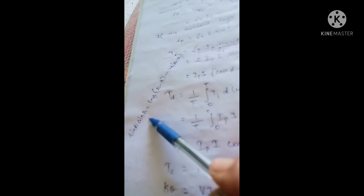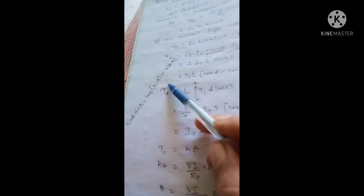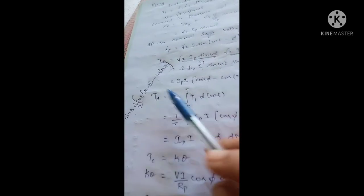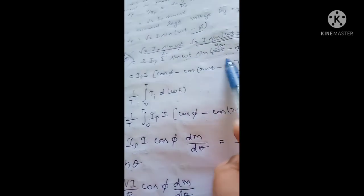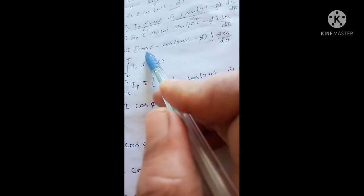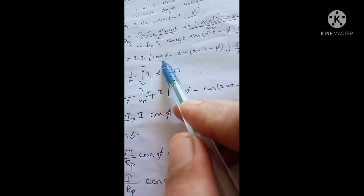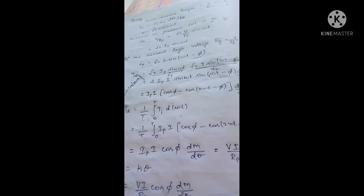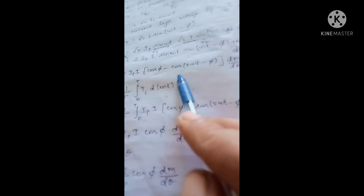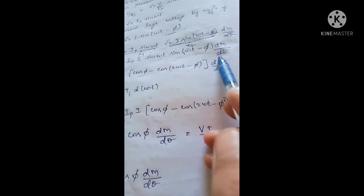Applying the identity: A = ωt and B = ωt − φ, so A − B = φ and A + B = 2ωt − φ. Therefore: Ti = Ip · I · [cos φ − cos(2ωt − φ)] · dM/dθ.